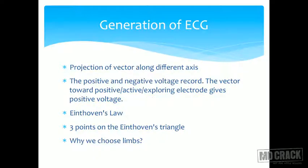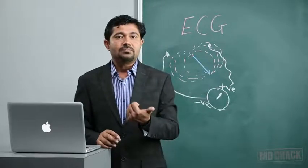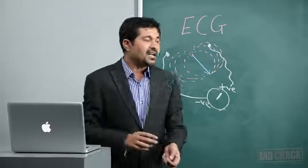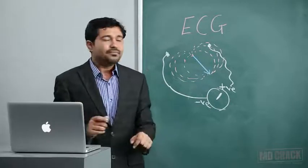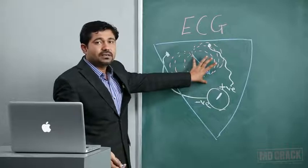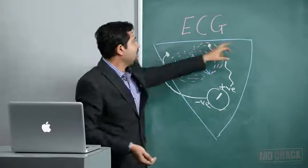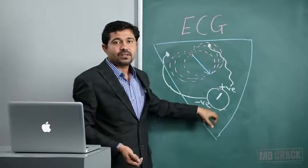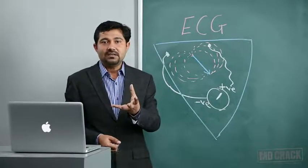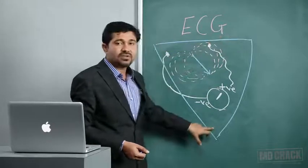Since our body is a volume conductor, we apply Einthoven's law or Einthoven's triangle. If an electrical vector is placed in the center of a volume conductor and we draw an isosceles triangle around it, the summation of potentials at the three angles of that isosceles triangle is equal to zero.